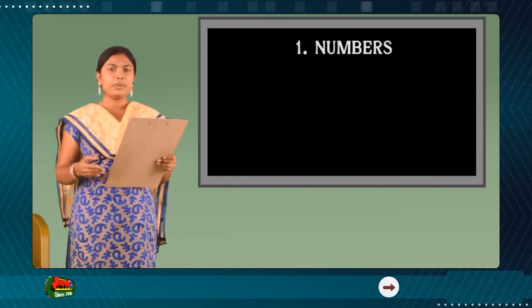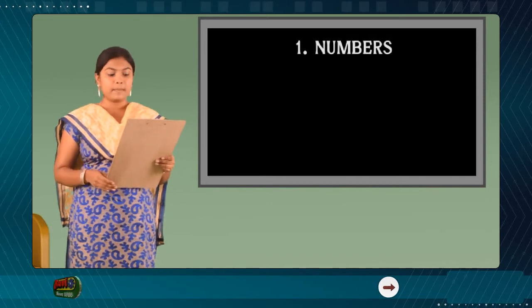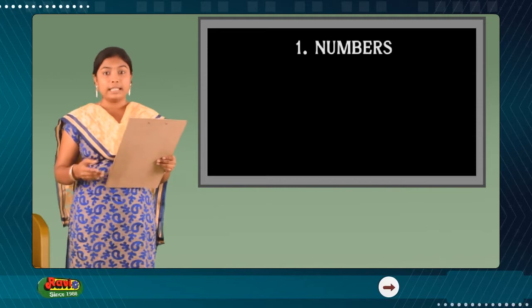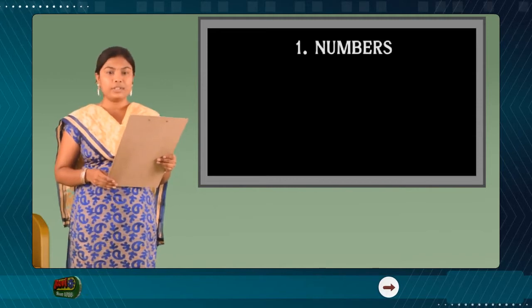Face value is the actual value of the digit. In the number 475, the 7 has a place value of 7.